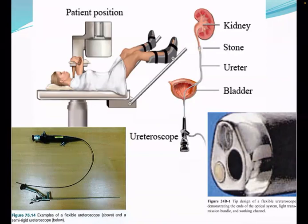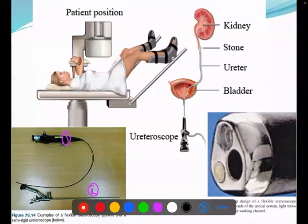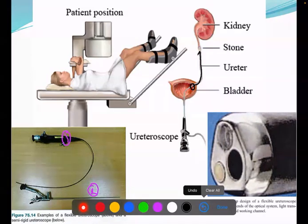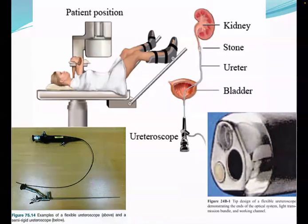The flexible ureteroscope is obviously better, but the problem is it is very costly. Once you go through the urethra, the first difficulty you encounter is at the beginning of the ureteric orifice — that is the most narrow part of the ureter. If you are able to negotiate through that area, you can go up, reach the stone, and then do fragmentation, or if it is small, take it out.